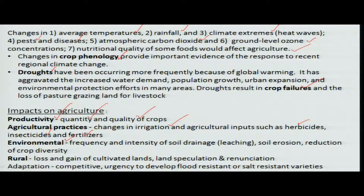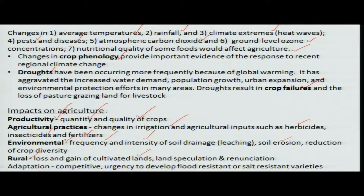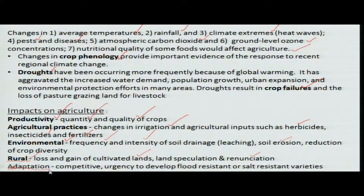From an environmental aspect, the problem is the frequency and intensity of soil drainage and erosion, which is likely to be heavy because of high-intensity rainfall — where the fertility of that particular soil is removed from the area. Again and again, supplements like fertilizers may have to be used. In rural areas, there could also be a loss or gain of cultivated lands and speculation for selling land for growth purposes, affecting livelihoods.